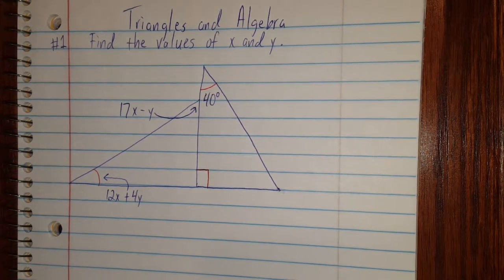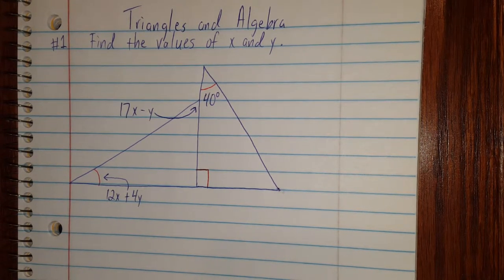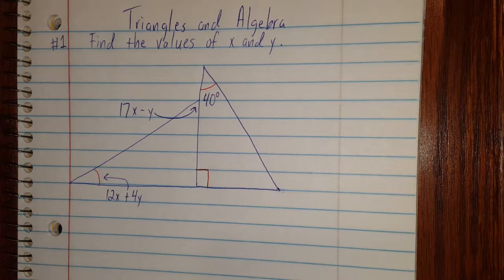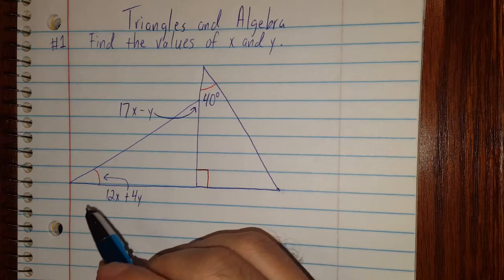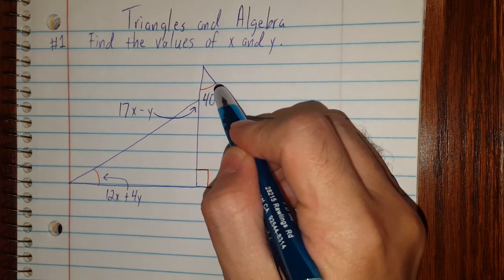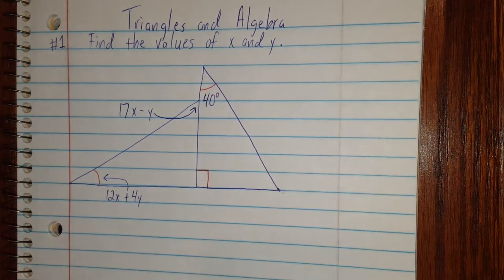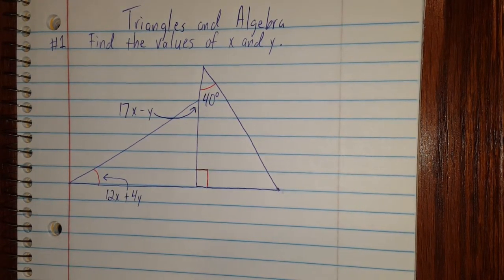Okay, in this video I'm going to show you how to solve an algebra problem given a couple of triangles. The first thing I want to show you is what these red arcs mean here and here. Anytime you see this one red arc here and you find another matching one red arc right here, it means those angles are equal.